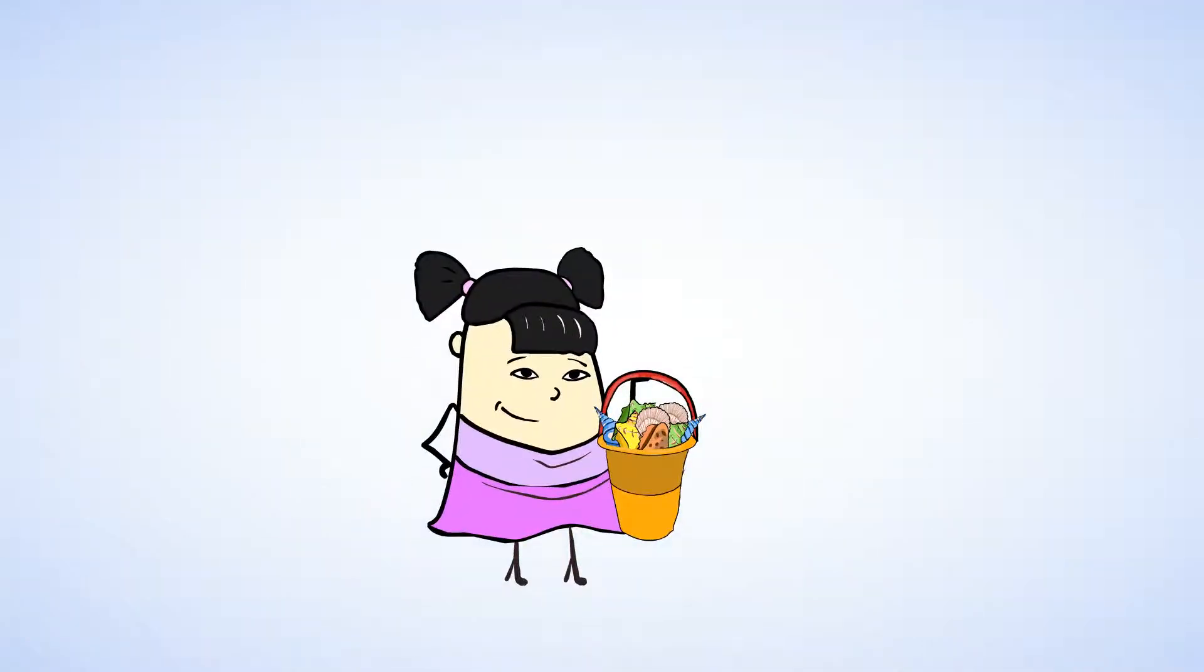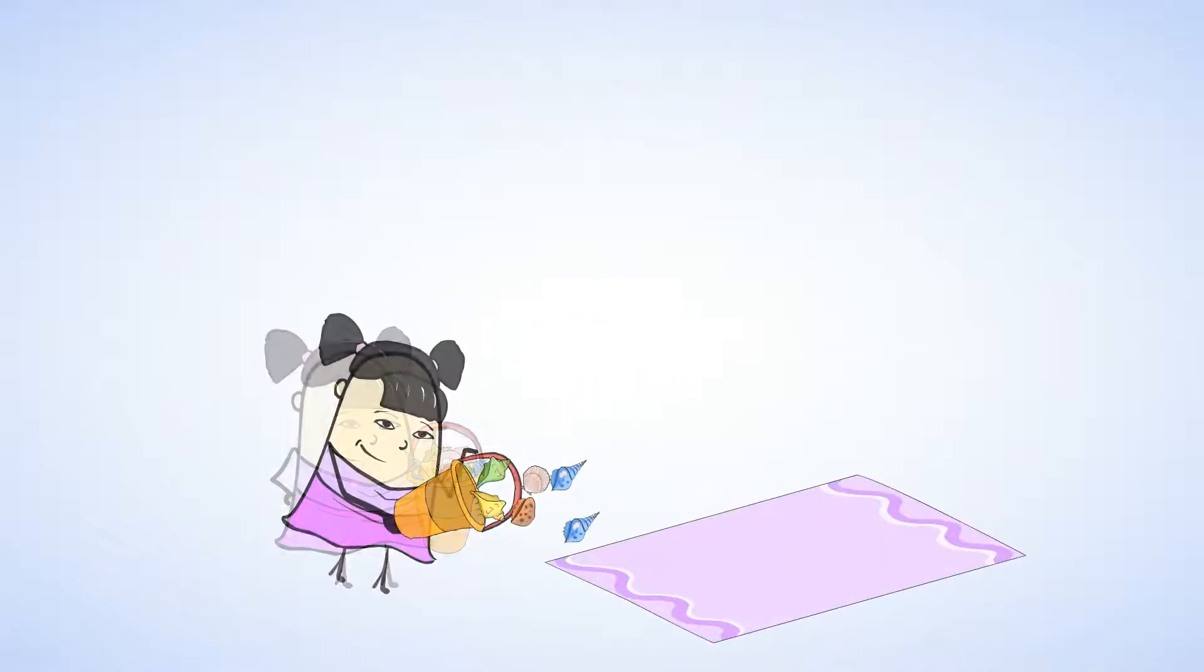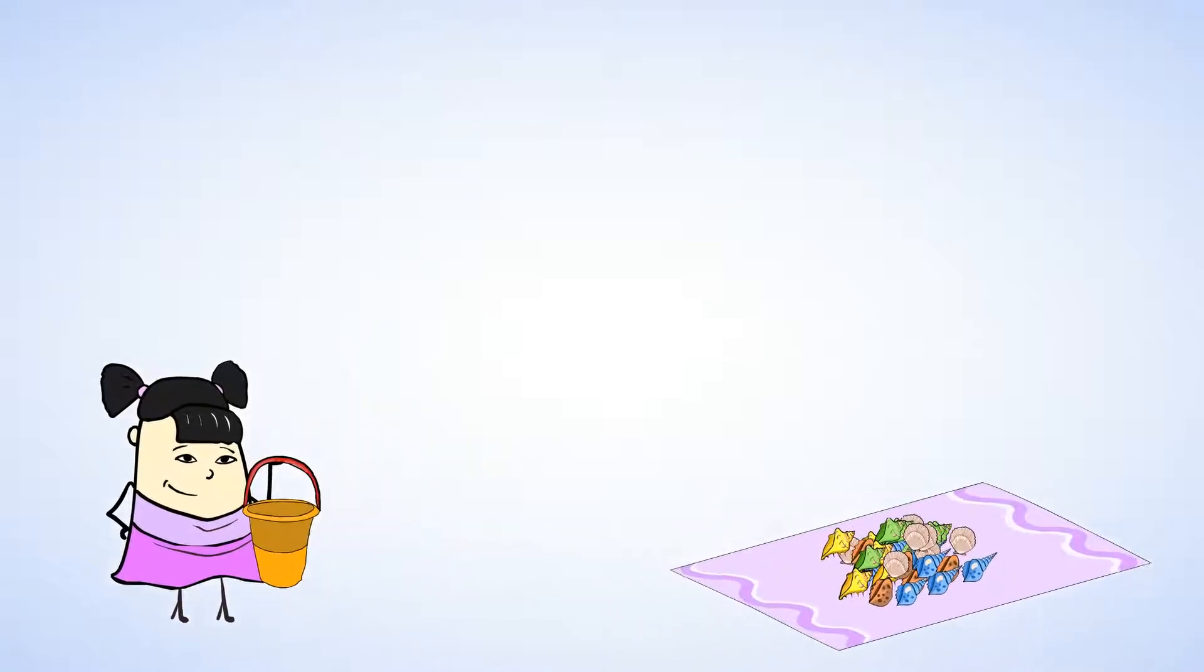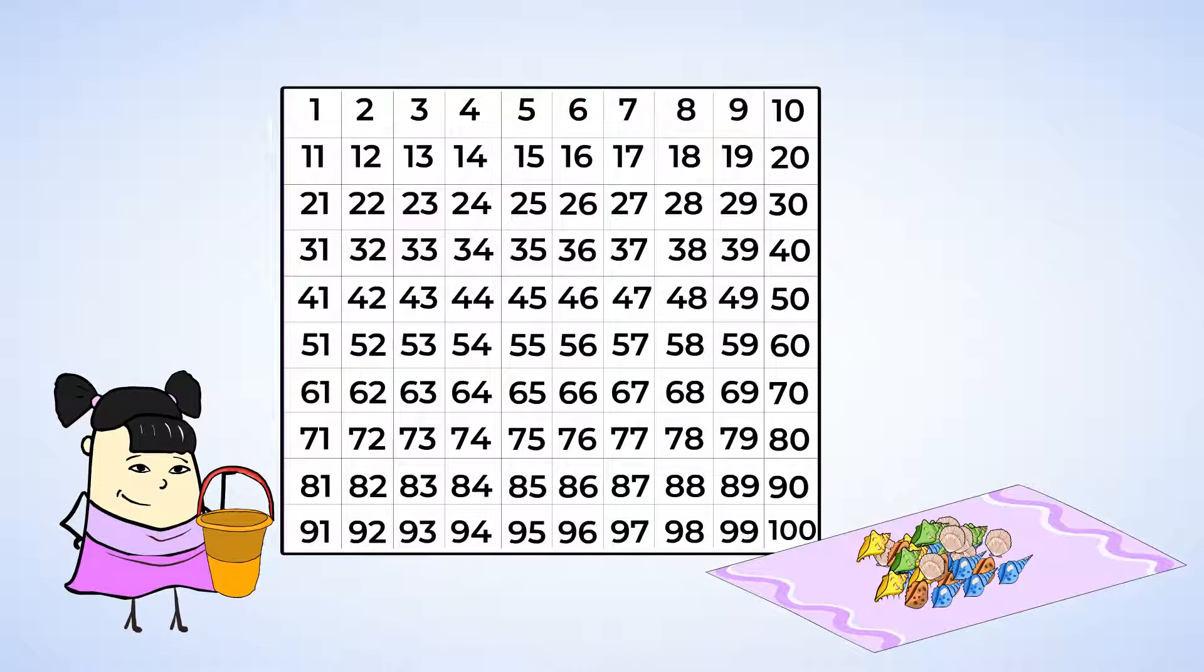Wow, look at this! Sue has a big bucket full of seashells. They're all different colors and shapes and sizes. Awesome! Let's dump them out on the beach towel so we can count them. Nice! Looks like Sue has a lot of shells here. I bet we can use our hundreds chart to help us count. Now let's get started.